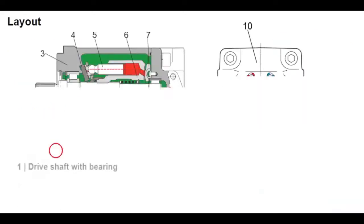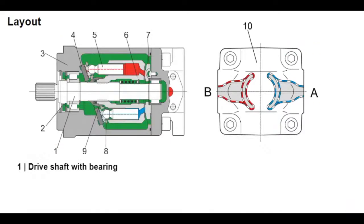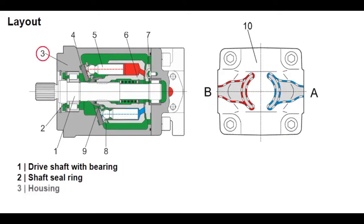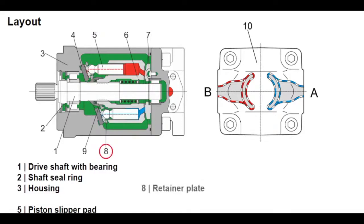The drive shaft (1) and bearings absorb axial and radial forces. A shaft seal (2), held in the one-piece housing (3) by a snap ring, seals the motor. The piston slipper pads (5) are hydrostatically mounted as a slide bearing to the sliding disc (4), by the retainer plate (8) and retainer ball (9).